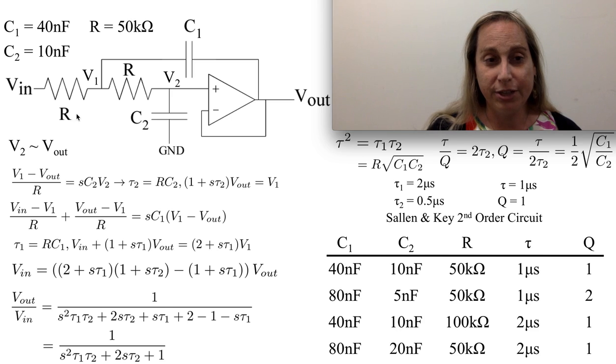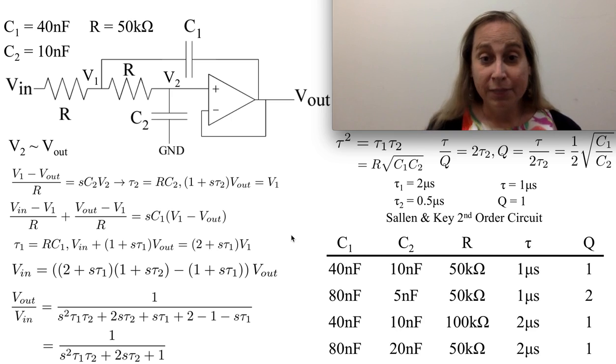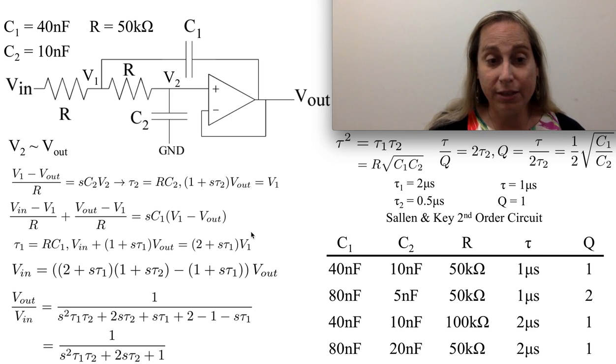Now by changing these two R's to be different, that might change the gain, but let's go with the fact we have a gain of one, and that works. But I still can actually look at the tau and the Q for the circuit.